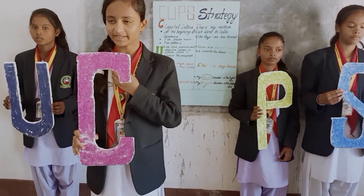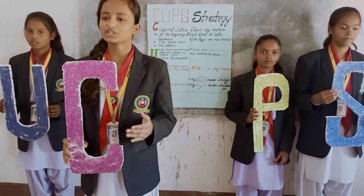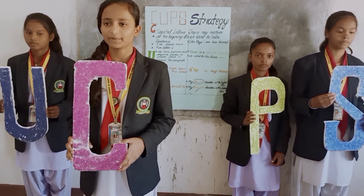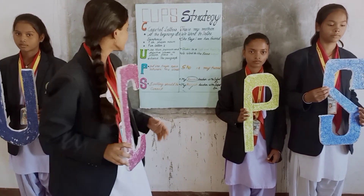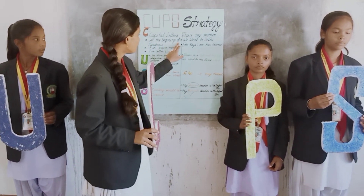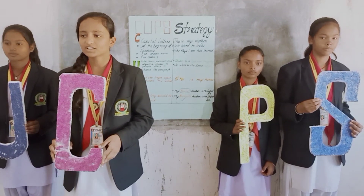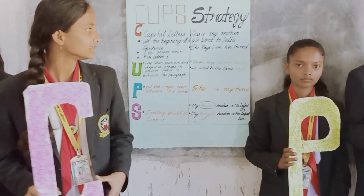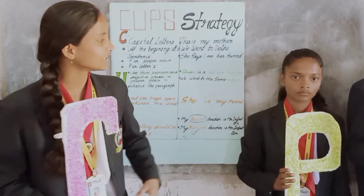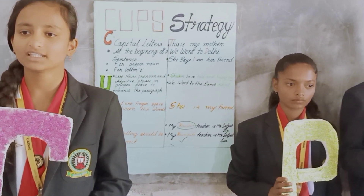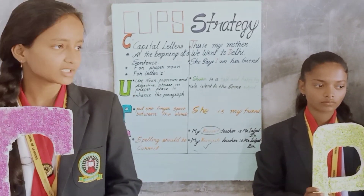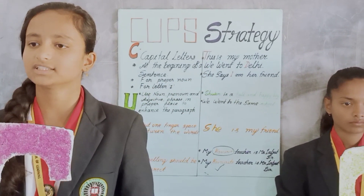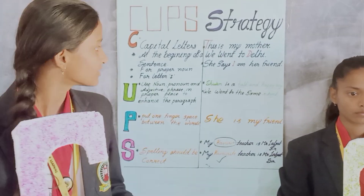I am here for the C component of CURPS. As you know, before starting any word or sentence we use a capital letter. The first rule is at the beginning of a sentence — when you start a sentence, the first letter is a capital letter. For example, 'This is my mother.' You can see that at the beginning of this sentence, the letter T is a capital letter.